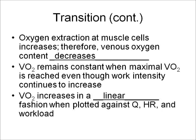VO2 remains constant when maximal VO2 is reached, even though work intensity continues to increase. So when you truly reach a maximal VO2, even if you increase work rate — which is speed or percentage grade that the person is running at — their VO2 is going to stay the same because it can't get any higher. VO2 increases in a linear fashion when plotted against cardiac output (Q), heart rate, and workload.